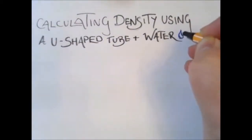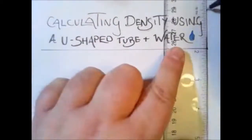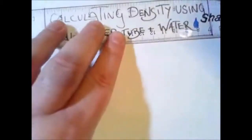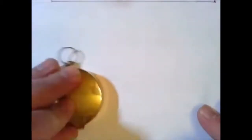Now, we mentioned during class that if we have a U-shaped tube and we pour some water into it, then it will sit at a level. And we also said that if we pour something in one side of it, then it will displace that water.